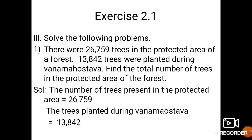First problem: there were 26,759 trees in the protected area of a forest. 13,842 trees were planted during one Mahotsava. We need to find the total number of trees in the protected area. So first we'll write down the given data. The number of trees present in the protected area is equal to 26,759. The trees planted during one Mahotsava is equal to 13,842.